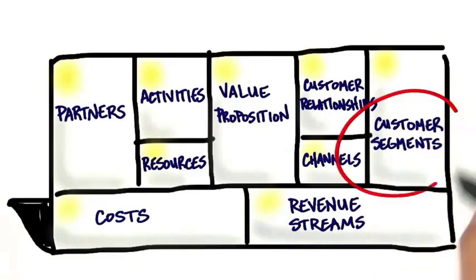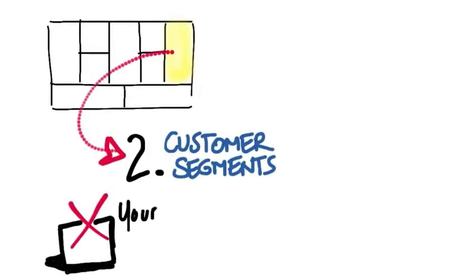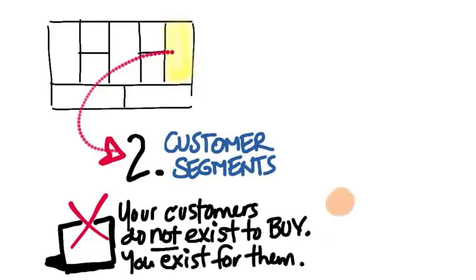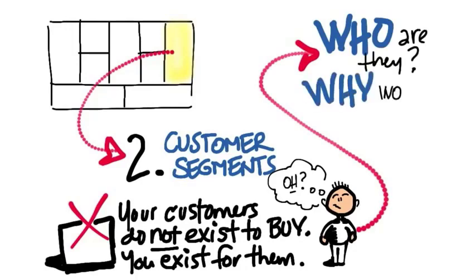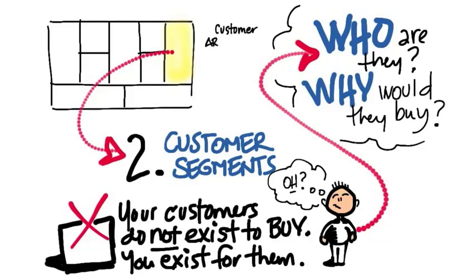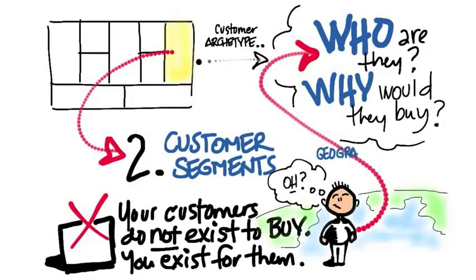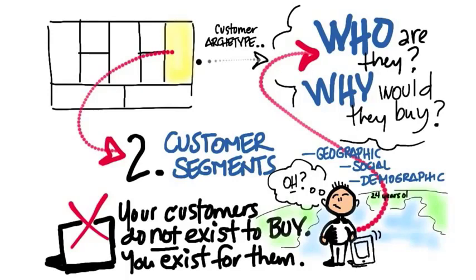The next thing is: who are my customers? Who are they and why would they buy? Your customers do not exist to buy — you exist for them. By getting out of the building, you'll figure out their geographic, social, and demographic characteristics, such that you could draw a picture of the archetype or persona of your customer. Most startups may have two or three types of customer archetypes, and you need to understand them in detail. On day one, you can only have a hypothesis about who they are.